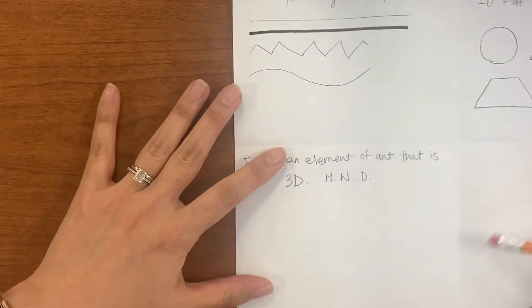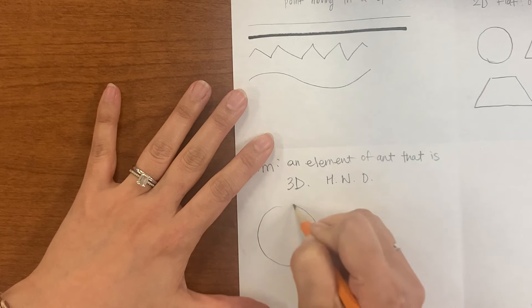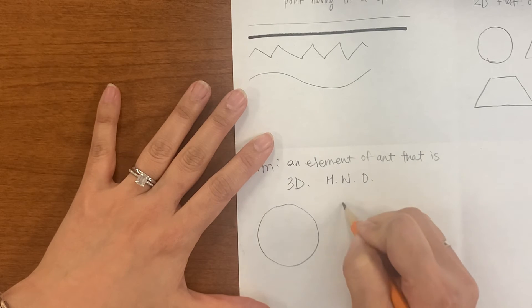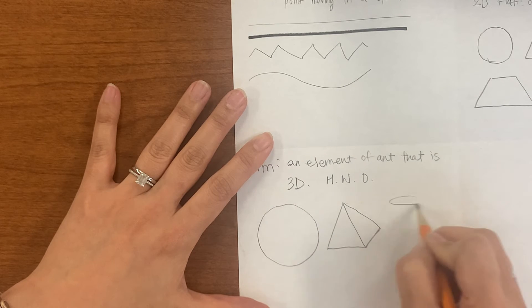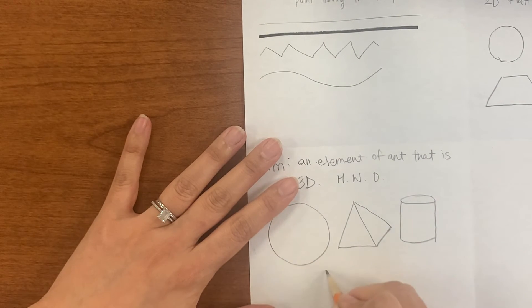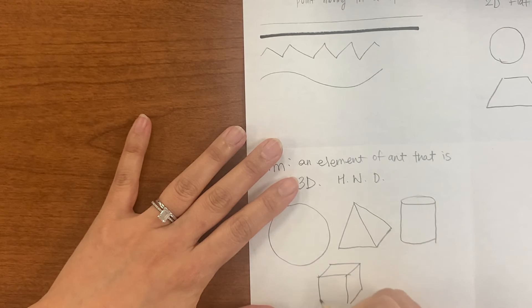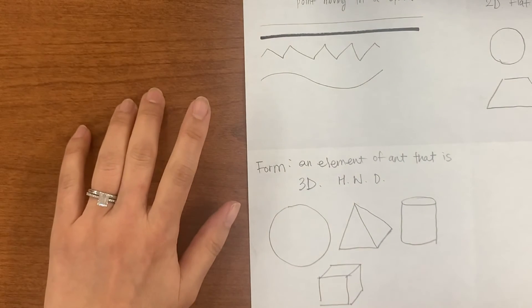So what are some of the examples of form? We have sphere, we have pyramid, we have cylinder, right? We have rectangular prism, right? All these are forms. All right.